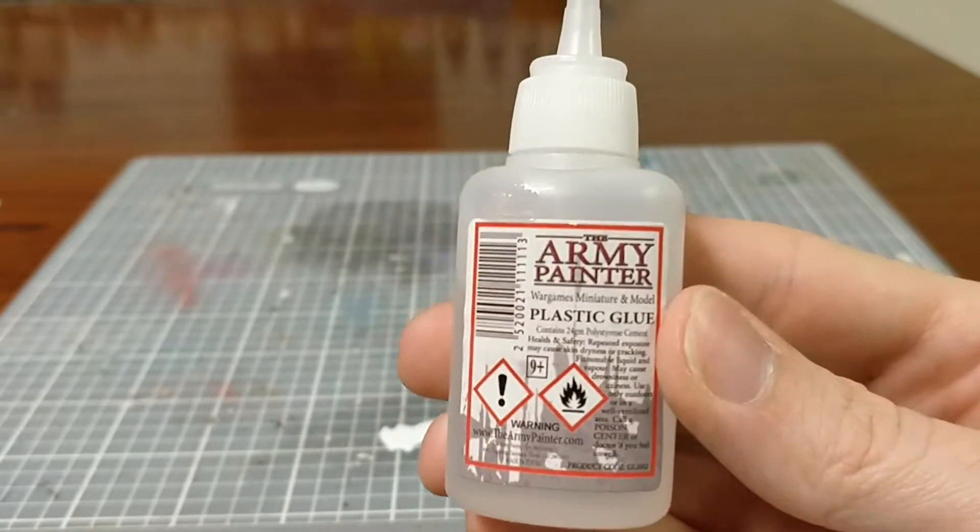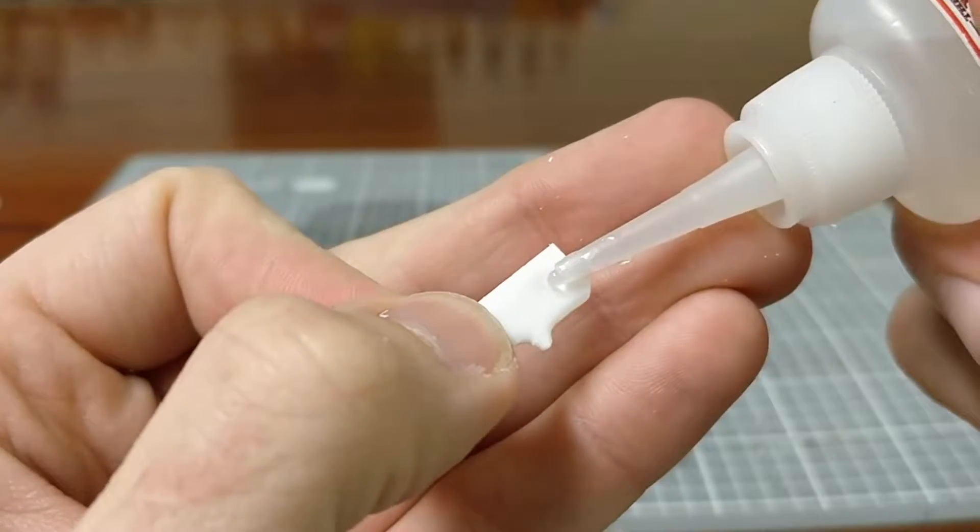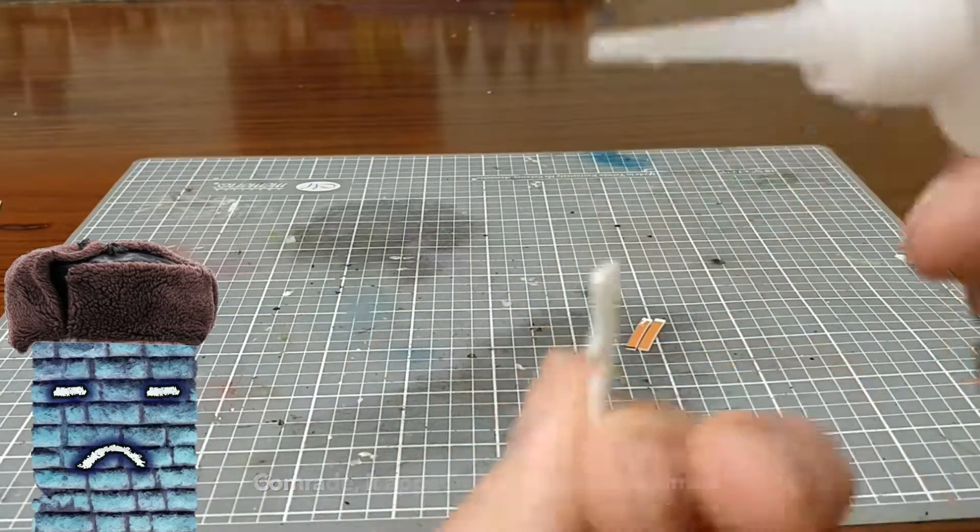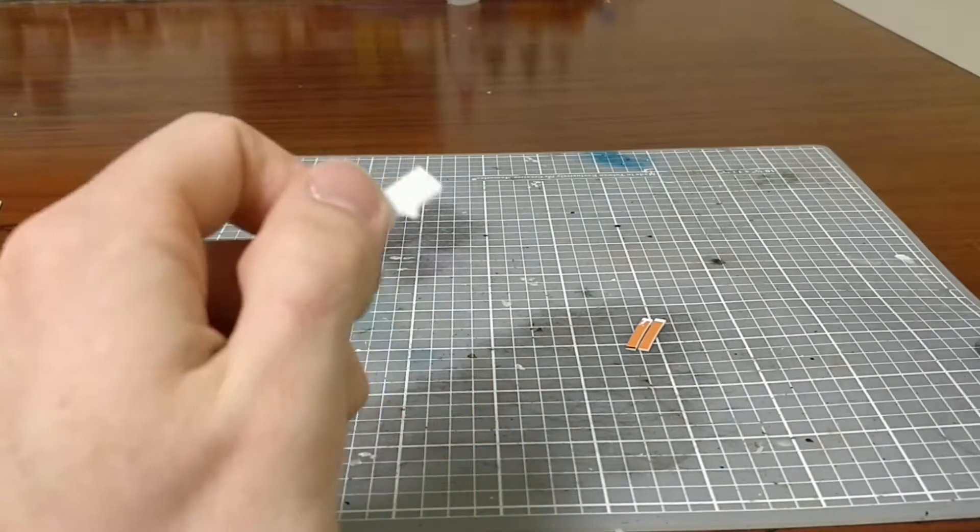Then I took some glue and I glued the little handle I cut and put it on the sword. Comrade, it appears you'll need a new camera. Yeah, no shit, I'm doing it on my phone, Bricks.